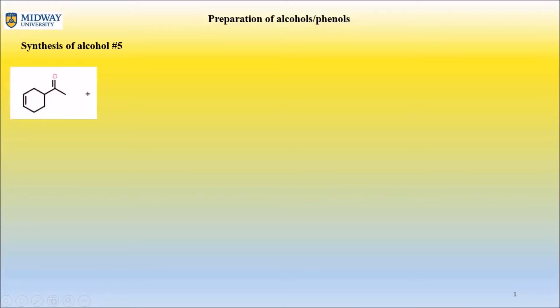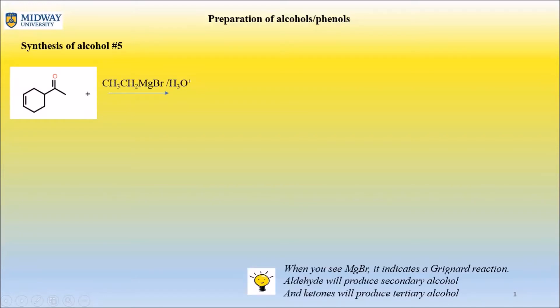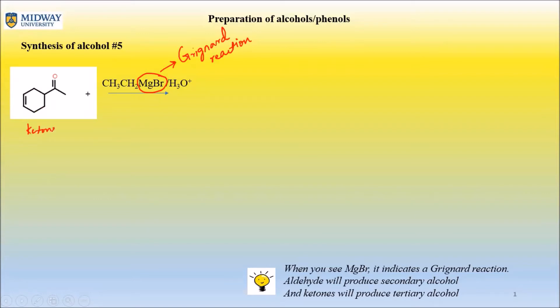Welcome back to synthesis of alcohol, method number five. We have reactants on the screen. Whenever you see MgBr, that's a clear indication you're dealing with a Grignard reaction. If you're starting with a ketone, which is what this is, you're going to end up with a tertiary alcohol.